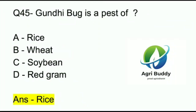Question 45. Gandhi bug is a pest of? A. Rice. B. Wheat. C. Soybean. D. Red gram. And the answer is Rice.